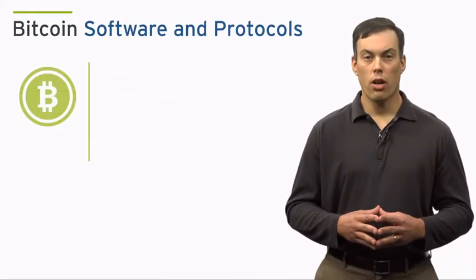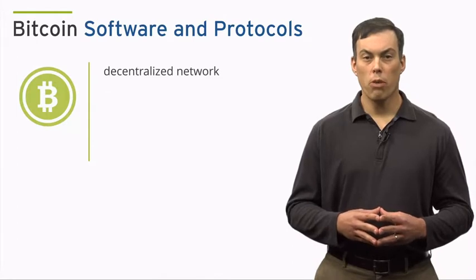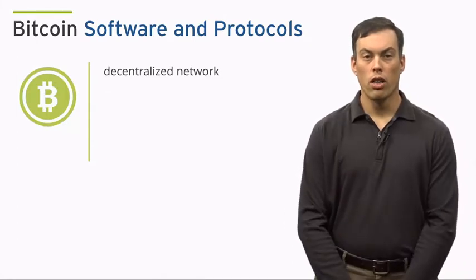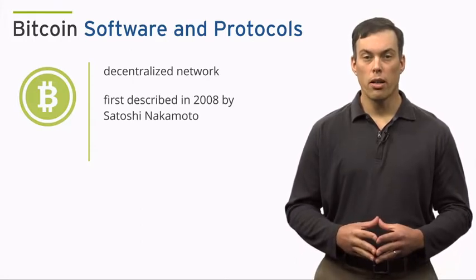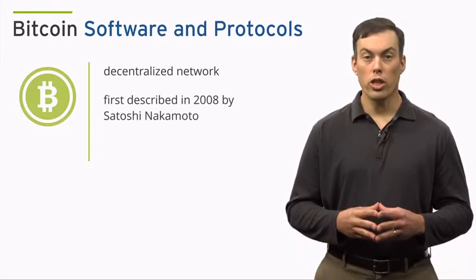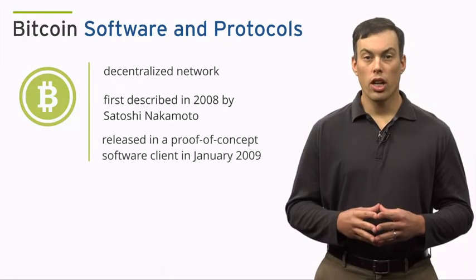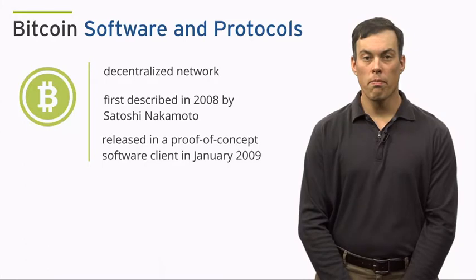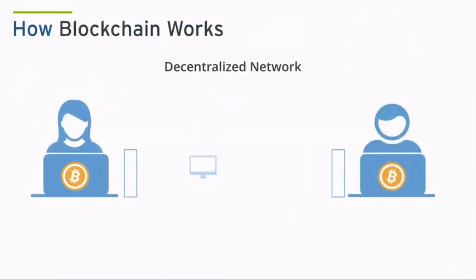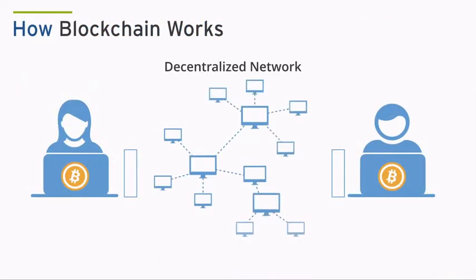Blockchain powers the Bitcoin software. Bitcoin software and protocols were first described in a white paper released in 2008 by an author using the pen name Satoshi Nakamoto, and Bitcoin itself was released in a proof-of-concept software client in January 2009. The Bitcoin community progressively built out a decentralized network of computers that exert a tremendous amount of computing power toward the singular purpose of validating and clearing transactions on the Bitcoin network.